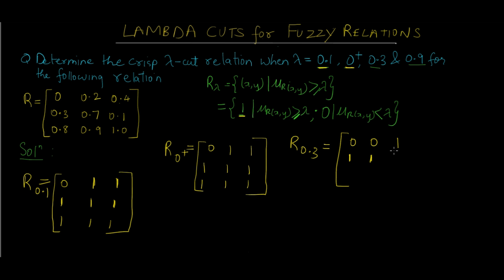Now here 0.1 is smaller than 0.3, so we replace it with 0. Then 0.8 and 0.9 both are greater than 0.3, so replace them with 1 and 1. Lastly 1.0 is greater than 0.3, which is why we replace it with 1. This is for the 0.3 lambda value.